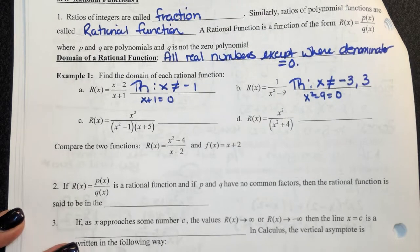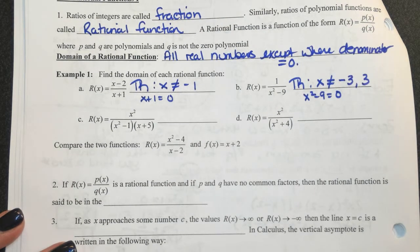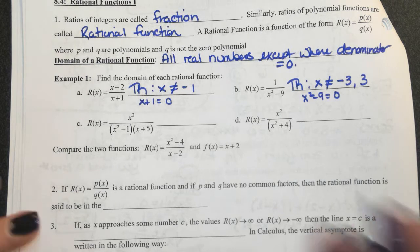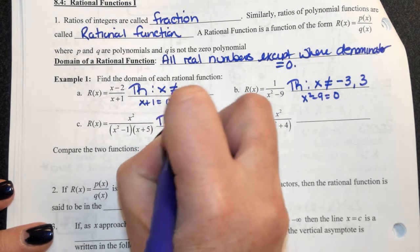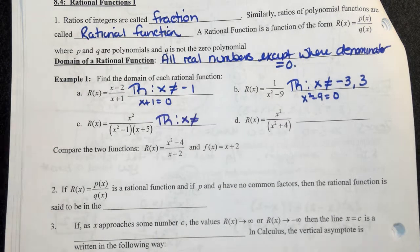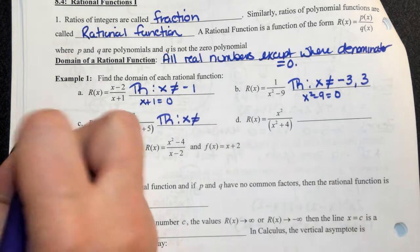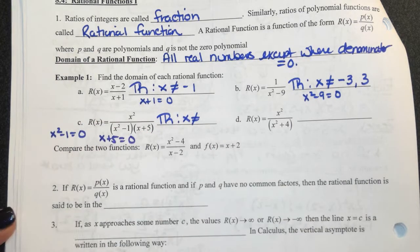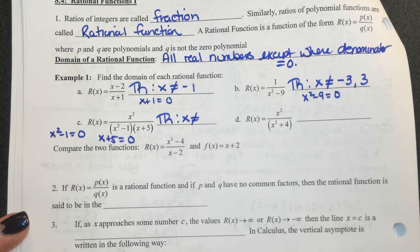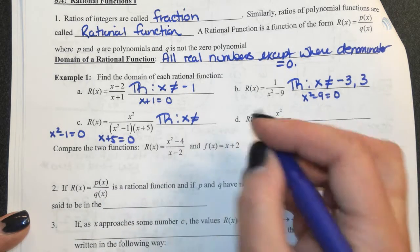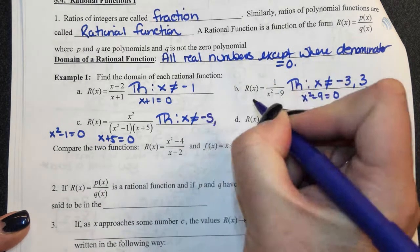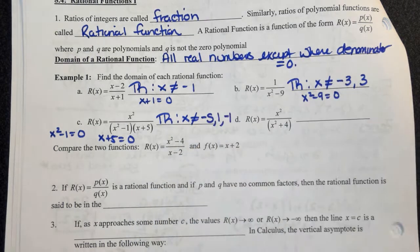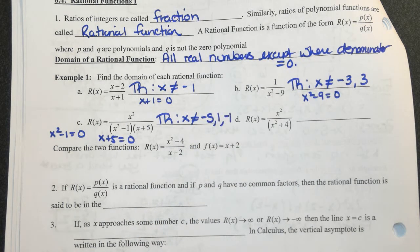Take a look at c. We have x squared minus one over x plus five. I know the domain is going to be all real numbers except where my denominator is equal to zero. In this particular case, I have two factors. I have to set x squared minus one equal to zero and x plus five equal to zero. The x values that give me zero in the denominator are negative five, one, and negative one. So the domain is going to be all real numbers except negative five, one, and negative one.